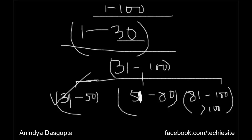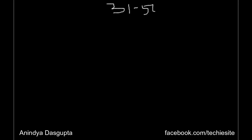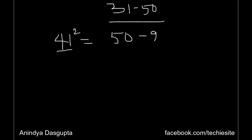Let's move forward with our first part: how we can find the squares of numbers between 31 to 50. Let's take 41 as an example. If the number is between 31 to 50, you have to find what number is deducted from 50 to reach that number. In our case, 50 minus 9 equals 41, so that number is 9. Now, 9 squared is 81, and 81 will form the last two digits of 41 squared.